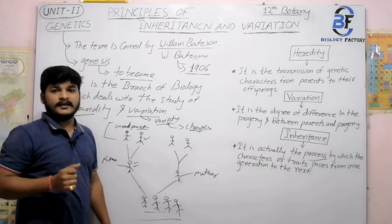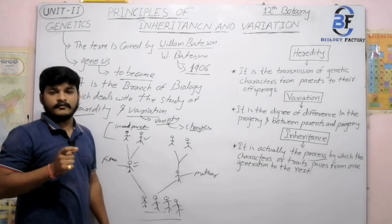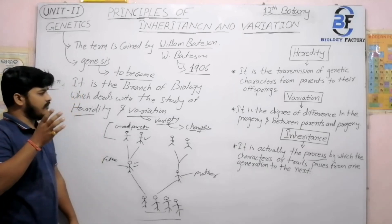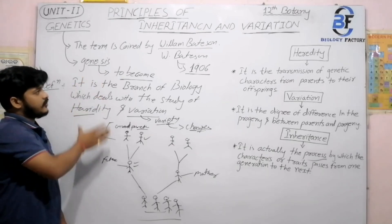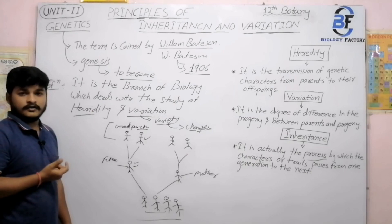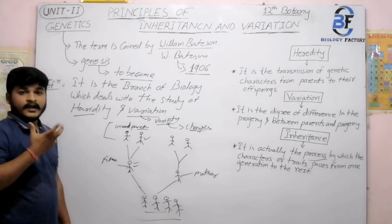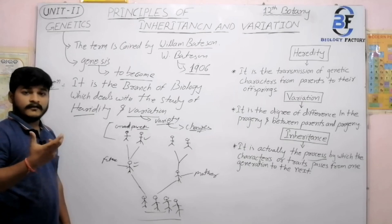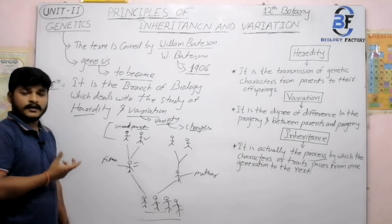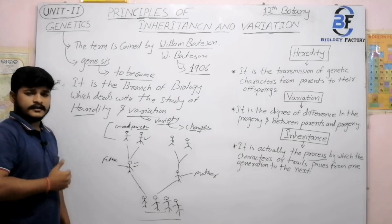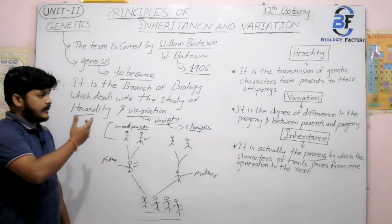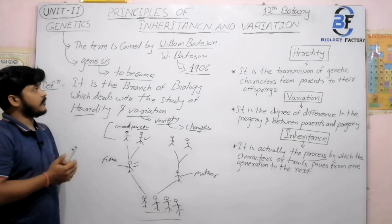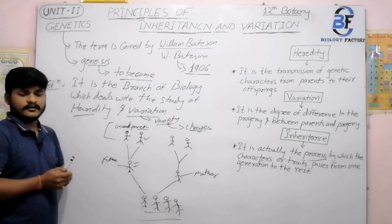The principles of inheritance and variation were mainly given by the father of genetics, Gregor Johann Mendel. In our next session, we will continue with who Gregor Johann Mendel is - the father of genetics - and how he conducted his experiments and gave the principles of inheritance and the principles of variation, one by one.